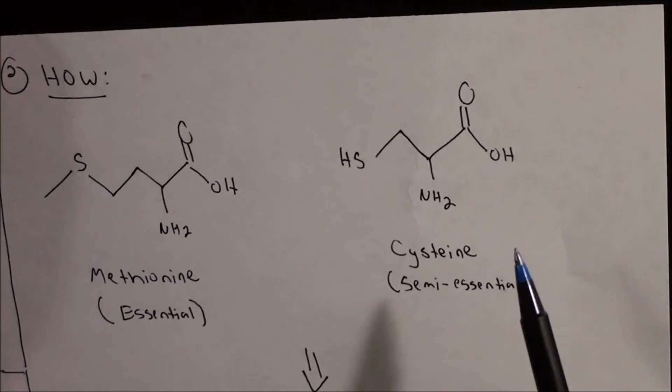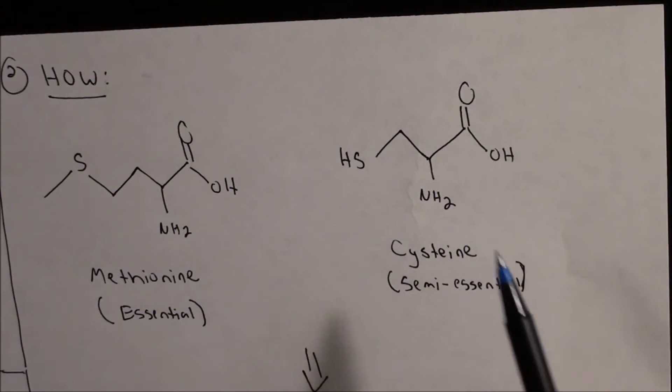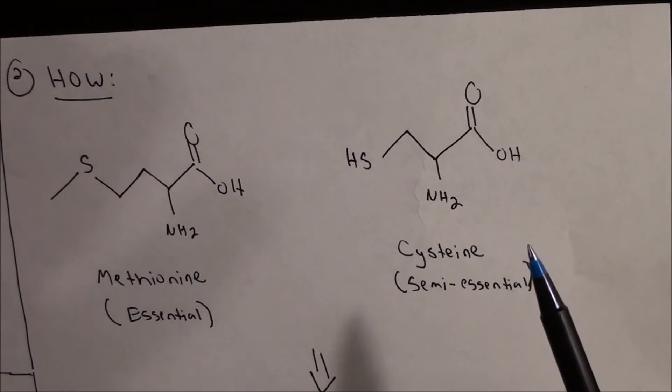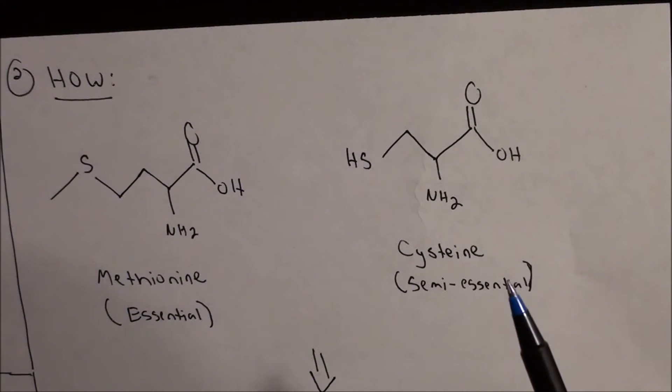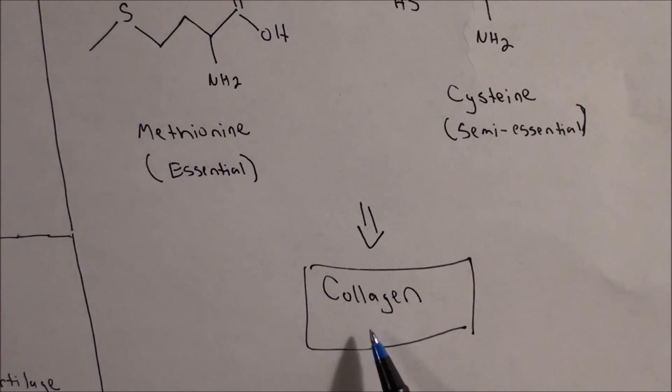And that's exactly what happens here. Cysteine can be synthesized from other sulfur donors, such as MSM. Cysteine is important for many things, but one of the most important is as a precursor, a starting building block for the molecule of collagen, which is a long chain of amino acids.